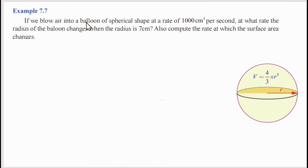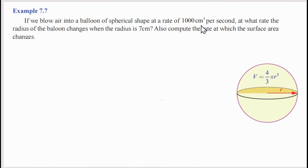If we blow a balloon, we increase the volume. The volume is blown into the balloon of spherical shape at the rate of 1000 cm³ per second. So this is dV/dt — the rate of change of volume with respect to time — and its value is 1000 cm³ per second.